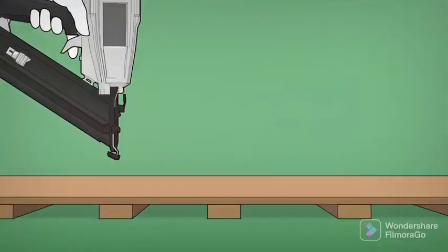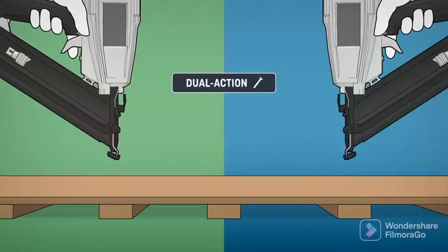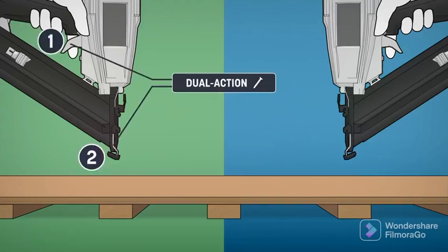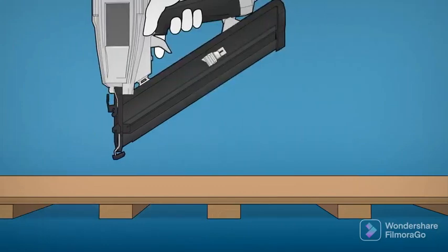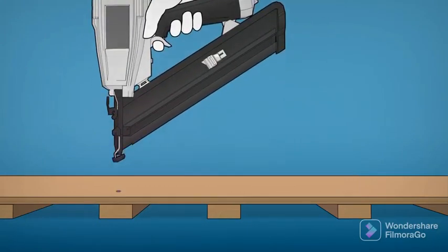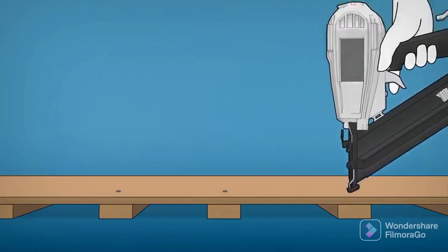For framing work, you must use a dual-action contact trip command. When using this setting, the nose contact element and the trigger must be pressed one after the other to fire a nail. But unlike the contact trigger command, both steps must be repeated each time you want to fire a nail.